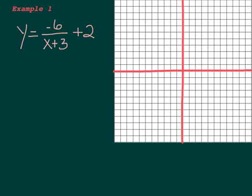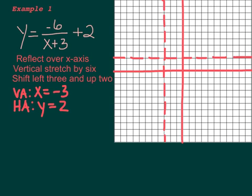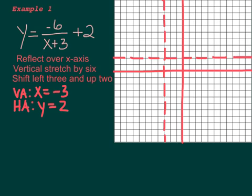Here's an example: y equals negative 6 over (x plus 3), plus 2. The negative is going to reflect it over the x-axis, the 6 is going to stretch it vertically, the 3 will shift it to the left 3 units, and the plus 2 will shift it all up 2. So I put my horizontal asymptote at y equals 2 and my vertical asymptote at x equals negative 3. A little trick: you can get your vertical asymptote by setting the denominator equal to zero — if I set x plus 3 equal to 0, then x equals negative 3.